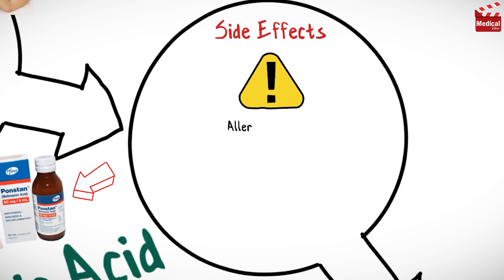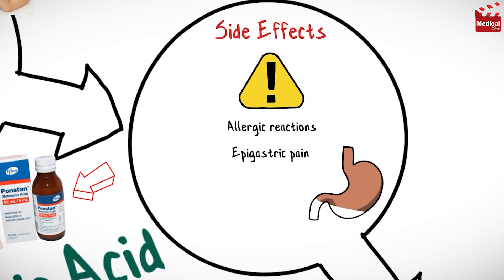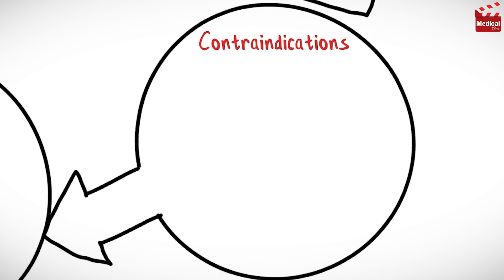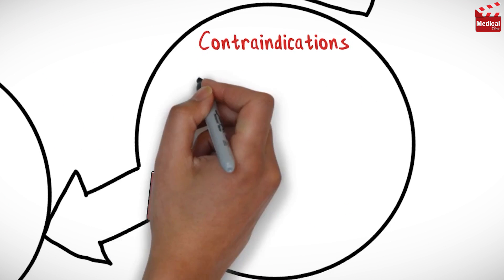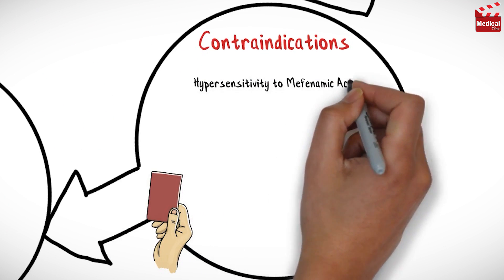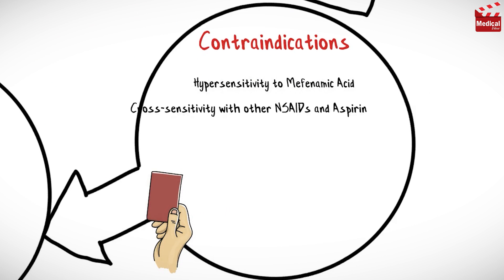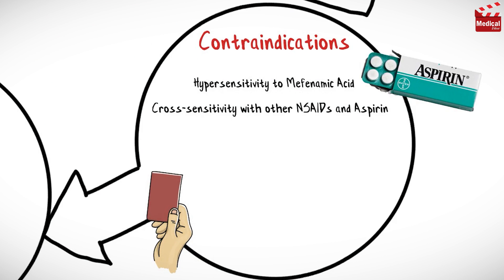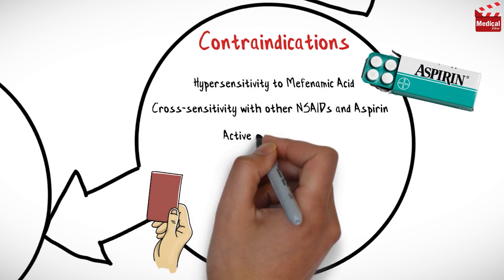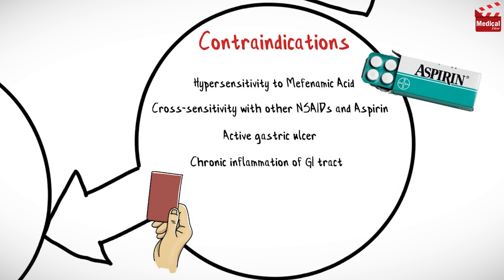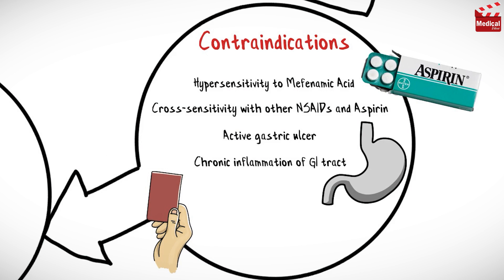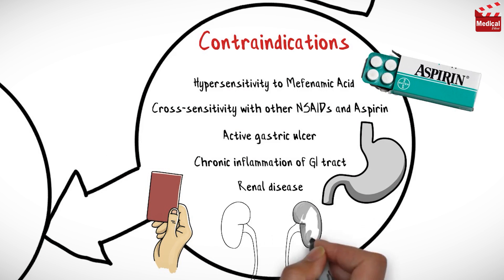Mefenamic acid may cause allergic reactions, epigastric pain, peptic ulcer, hemorrhage, and renal impairment. It is contraindicated in case of hypersensitivity to mefenamic acid or cross-sensitivity with other non-steroidal anti-inflammatory medications and aspirin, and also in case of active gastric ulcer, chronic inflammation of the gastrointestinal tract, or renal disease.